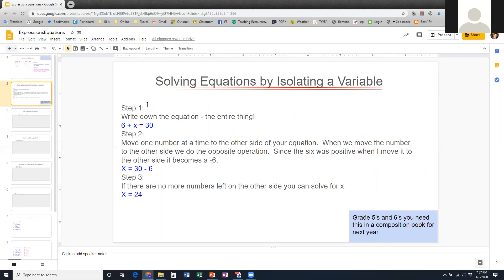We talked about this early in the year. We talked about solving equations, and we talked about a waterfall method. And we're going to talk about it now by isolating a variable. And all that means is moving the letter onto one side of the equation. So the first thing you're going to do is write down the equation. That means the entire thing. So that includes the equal sign and whatever's on the other side of it.